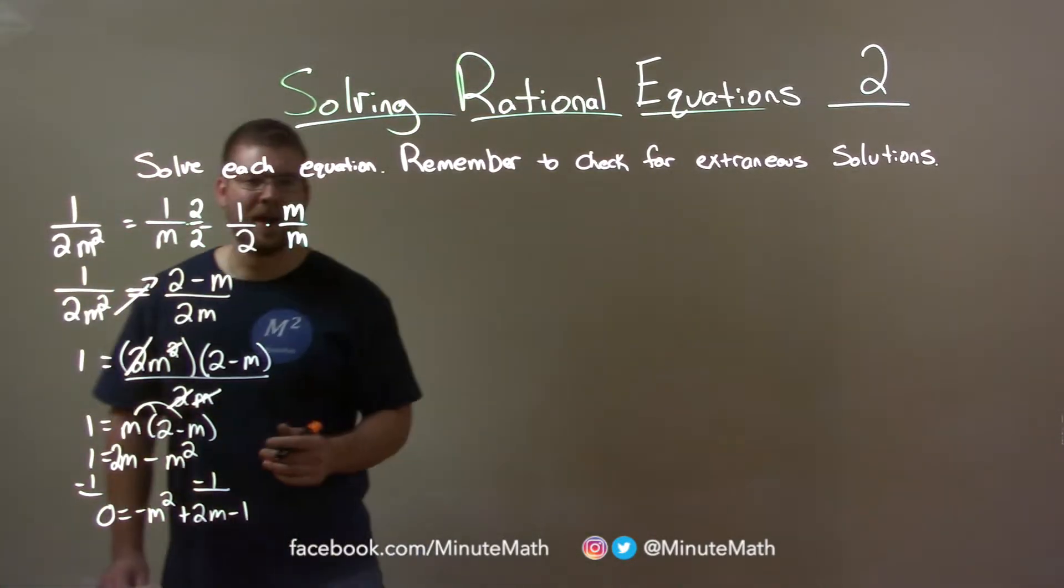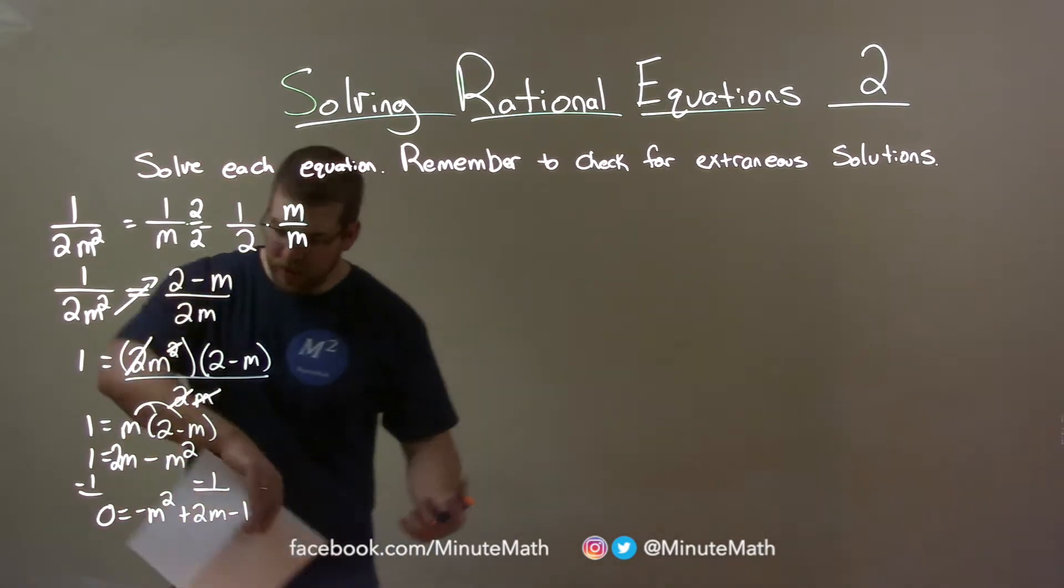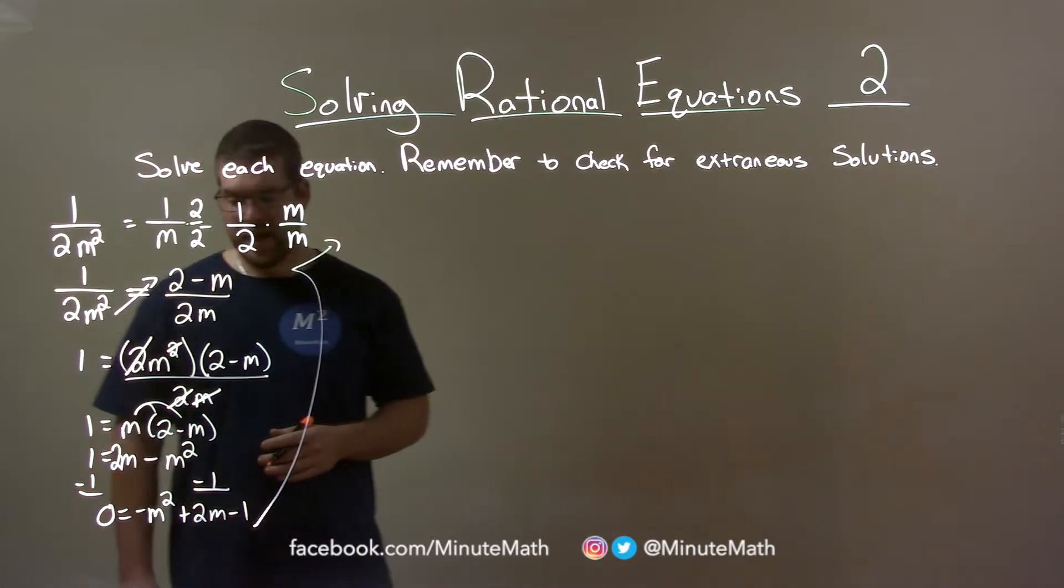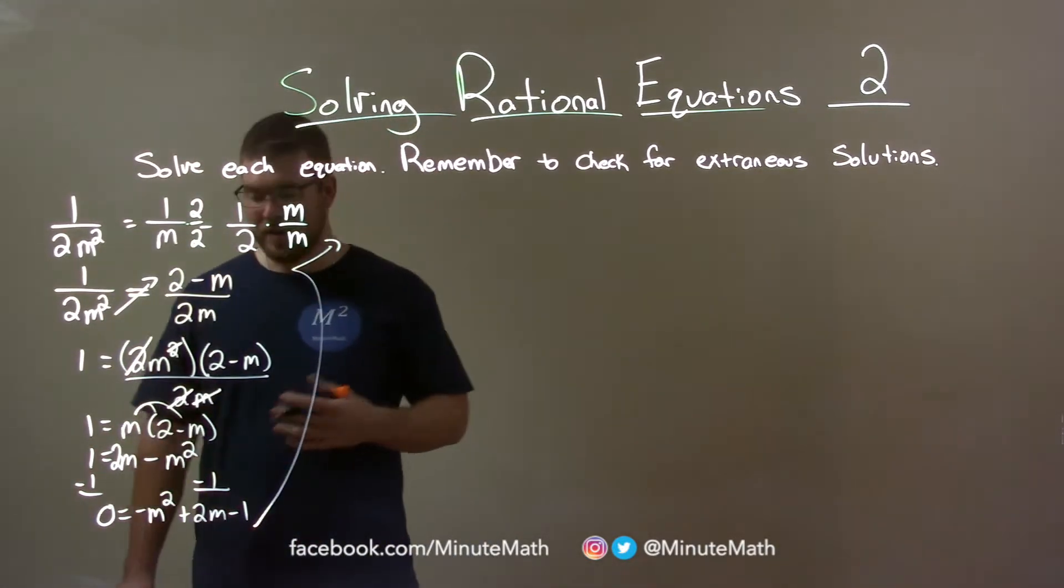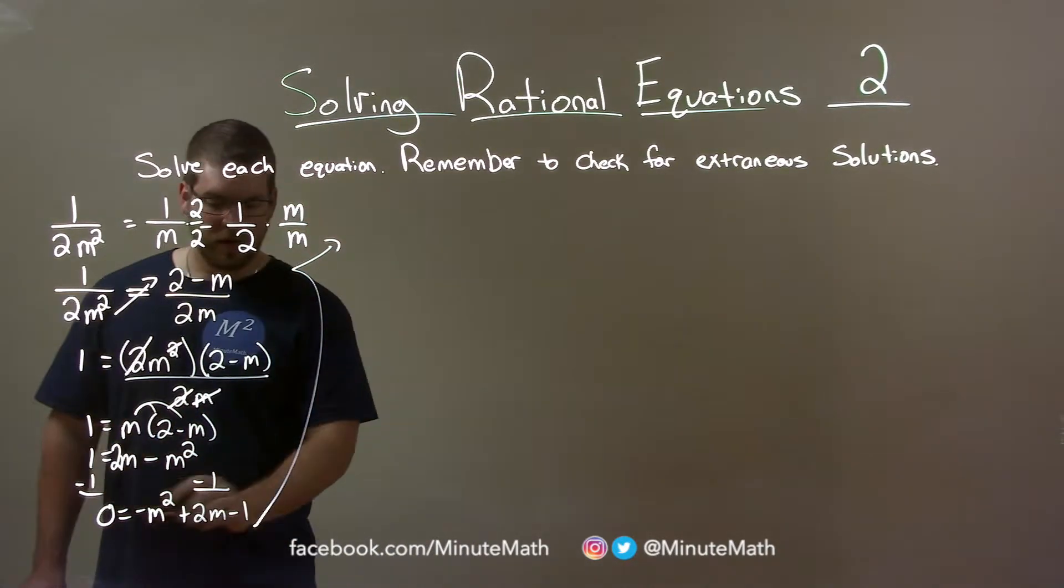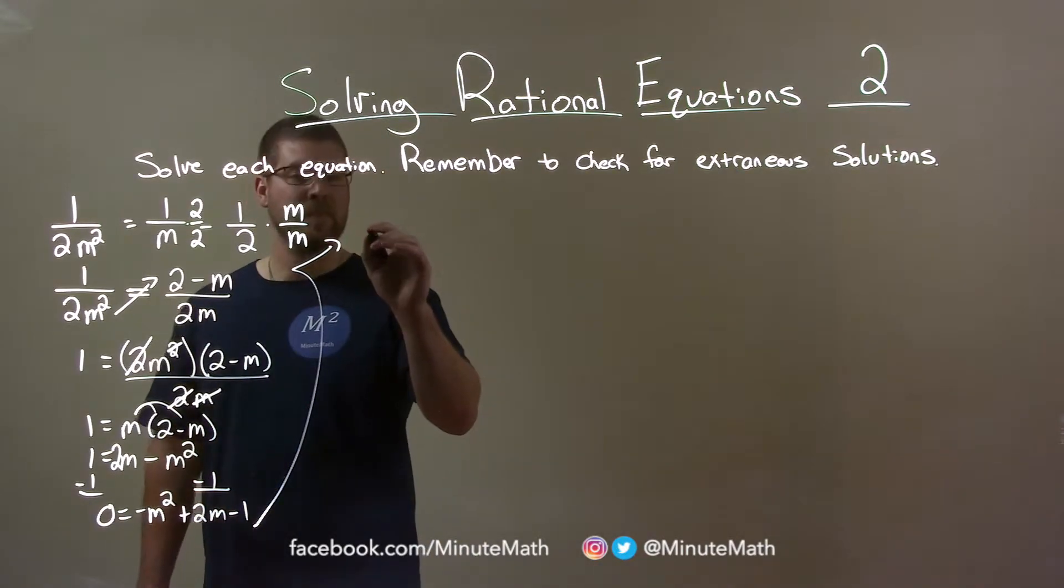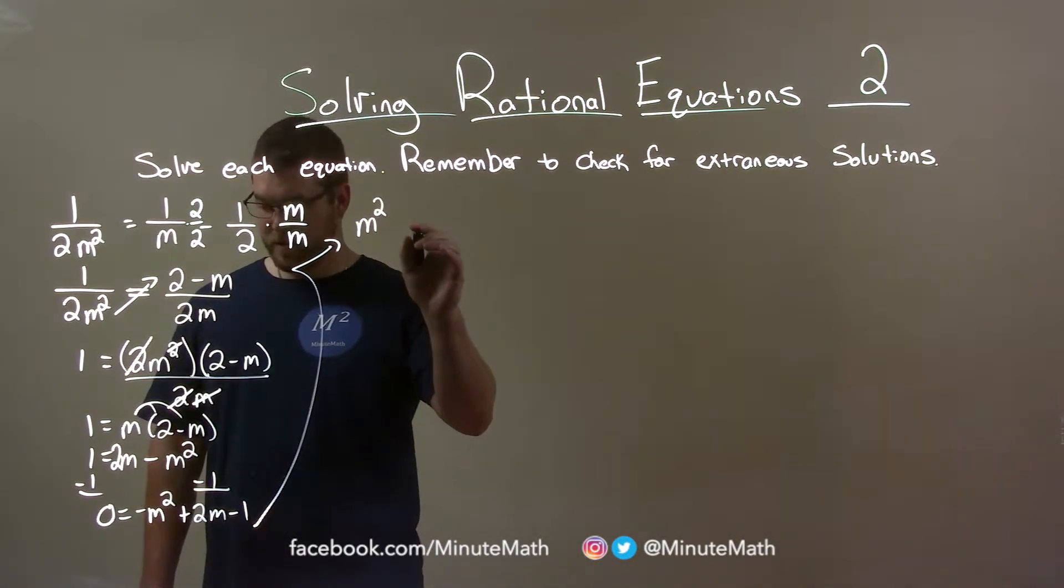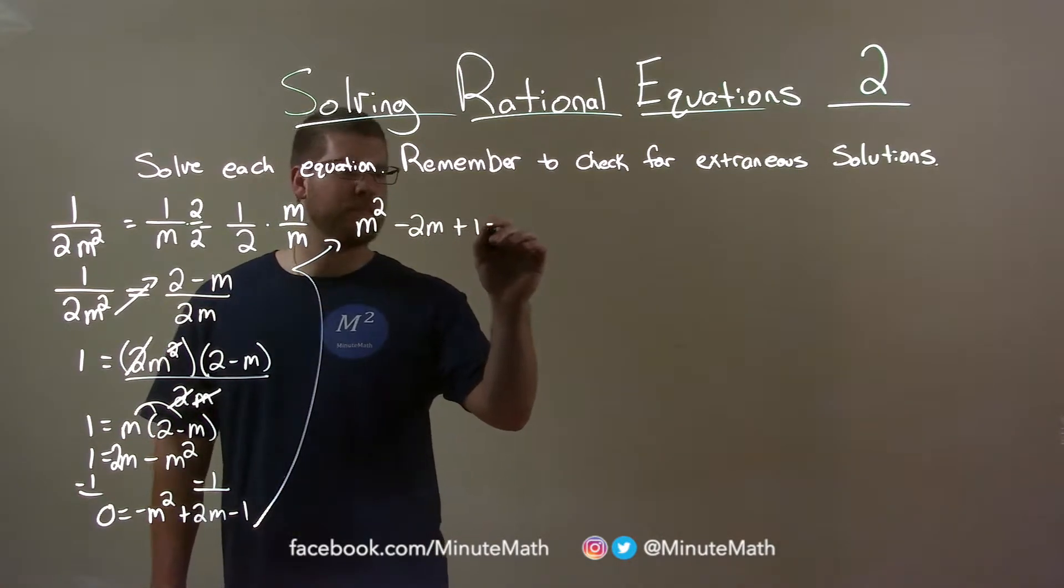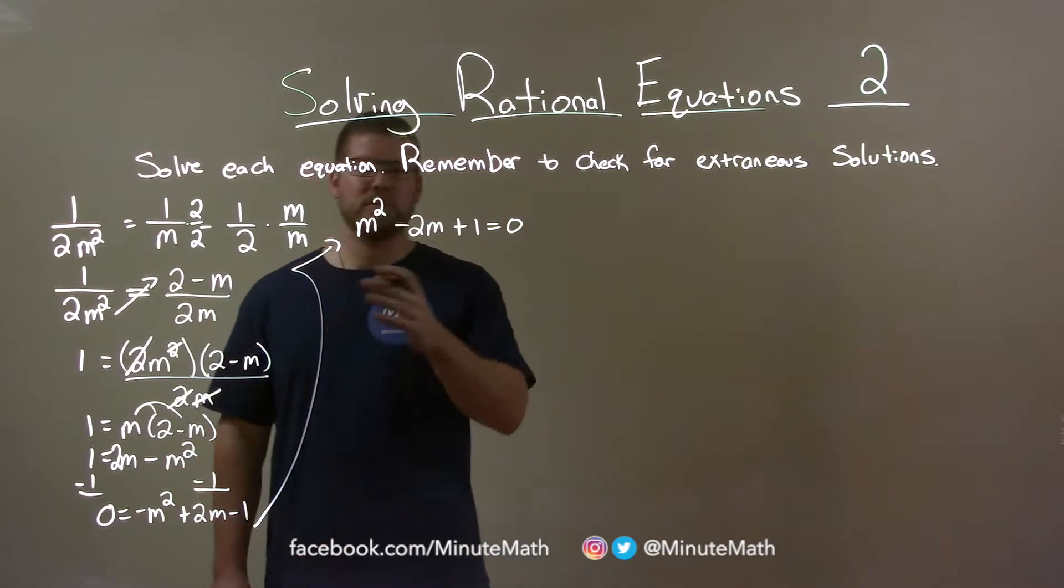Now, looking at this, I actually like to rearrange it kind of the other way, bring everything over to the other side. I like to keep my m squared positive to factor. It's a preference of mine. So I'm going to add an m squared, subtract a 2m, and add a 1 to both sides. So we have m squared here minus 2m plus 1 equals 0. And that's a much easier problem to factor.